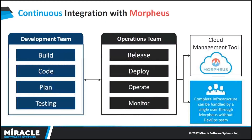The next slide is continuous integration with Morpheus. The development team comprises build, code, plan, and testing stages. The operations team comprises release, deploy, operate, and monitor stages. Normally a large number of people are needed to manage all these stages. But by using Morpheus, a single user can handle all these stages — build, plan, operate, monitor, and deploy — because Morpheus has the flexibility to handle multiple clouds on a single pane of glass. There is no need to maintain large teams.